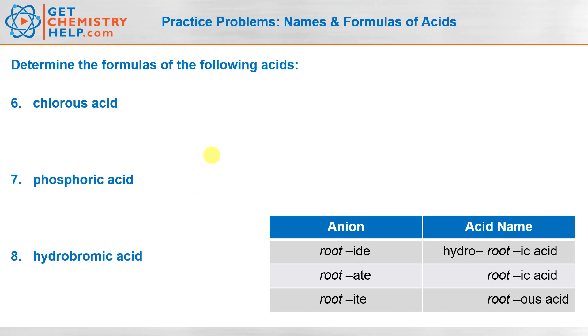Okay. Well, let's try a few the other way. Here we're given the name and we want to determine the formula. So chlorous acid. So I see it's based off of ous acid. So ous acid tells me the anion must have been ite. So chlorous must have come from chlorite ion.